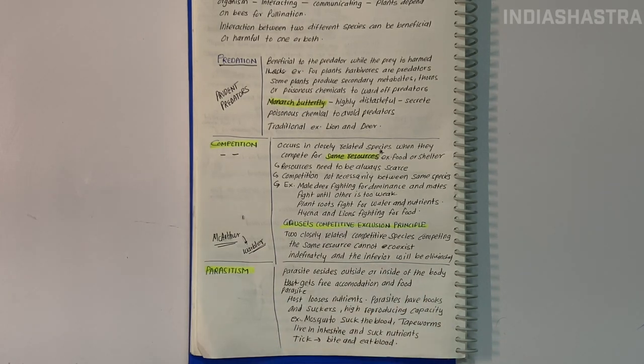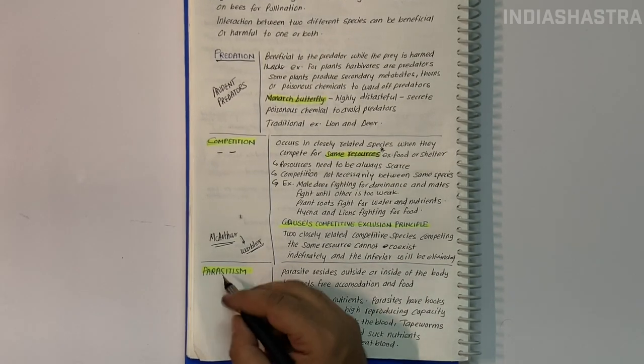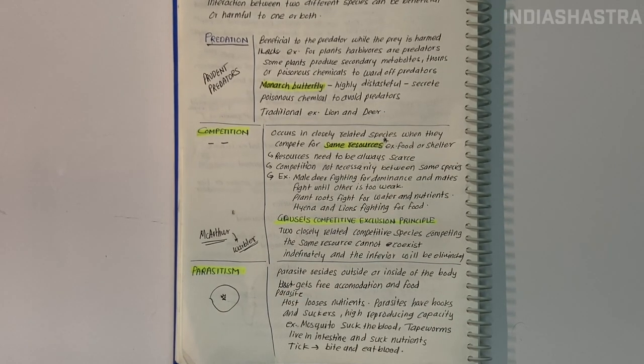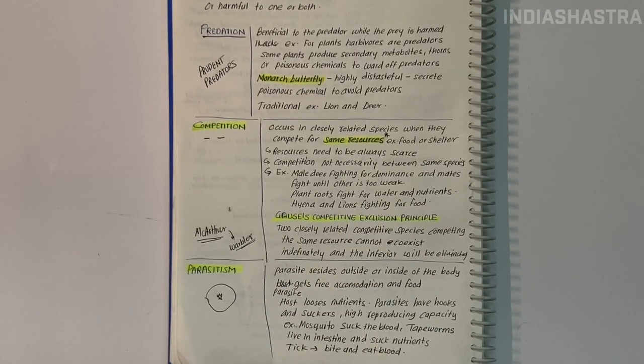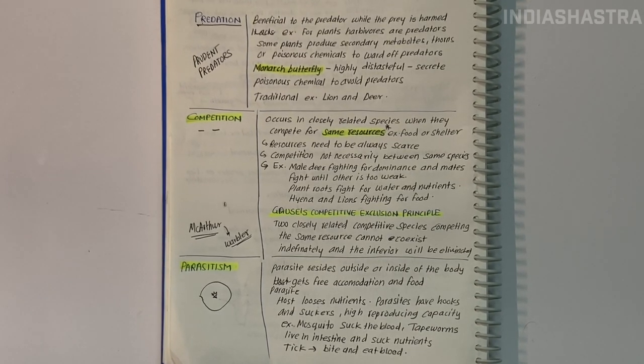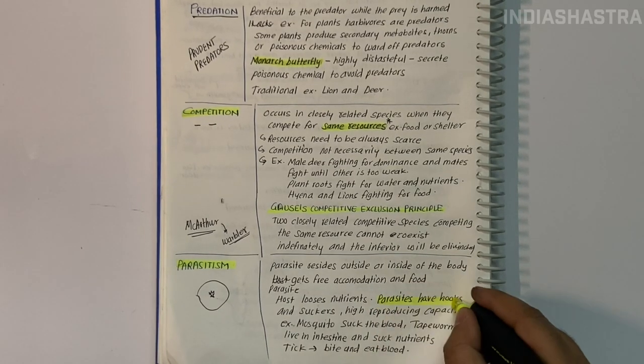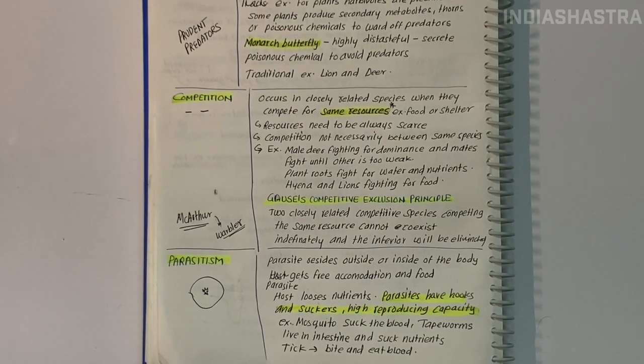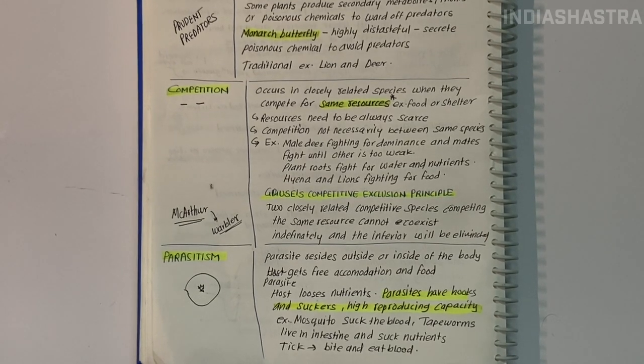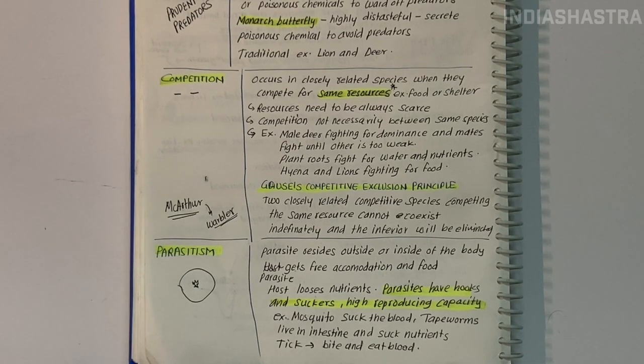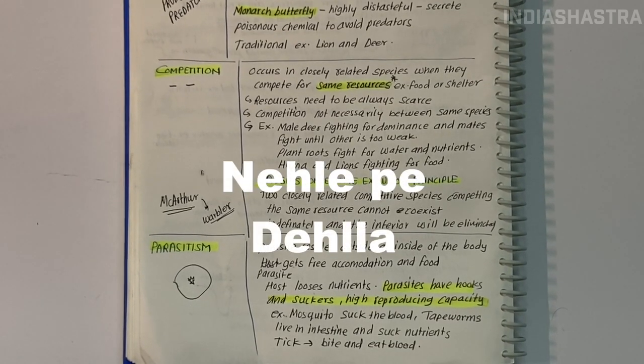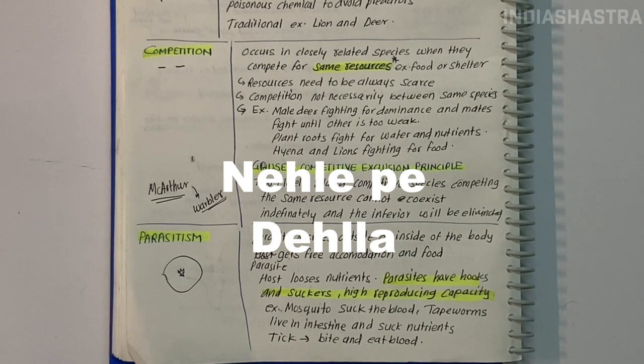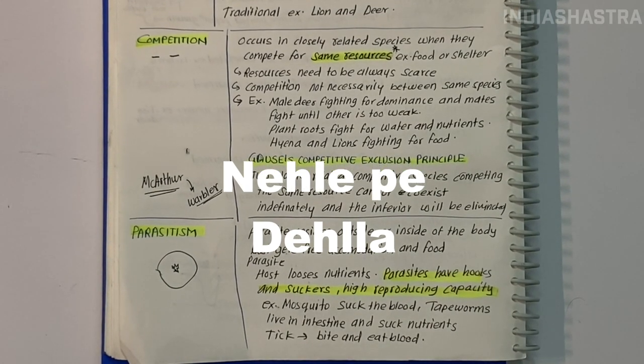Parasitism: One organism, the parasite, lives on or inside another organism, the host, causing it harm. The parasite is structurally adapted to this lifestyle. Many parasites are host-specific, able to parasitize only a single host species. Both host and parasite tend to co-evolve - if the host evolved mechanisms for rejecting the parasite, the parasite must evolve mechanisms to counteract them in order to be successful.